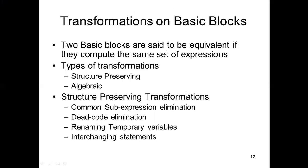After constructing the flow graph, we apply transformations. Two basic blocks are said to be equivalent if they compute the same set of expressions. There are two types of transformations: structure-preserving transformations and algebraic transformations. Structure-preserving transformations include common sub-expression elimination, dead code elimination, renaming of temporary variables, and interchanging of statements.